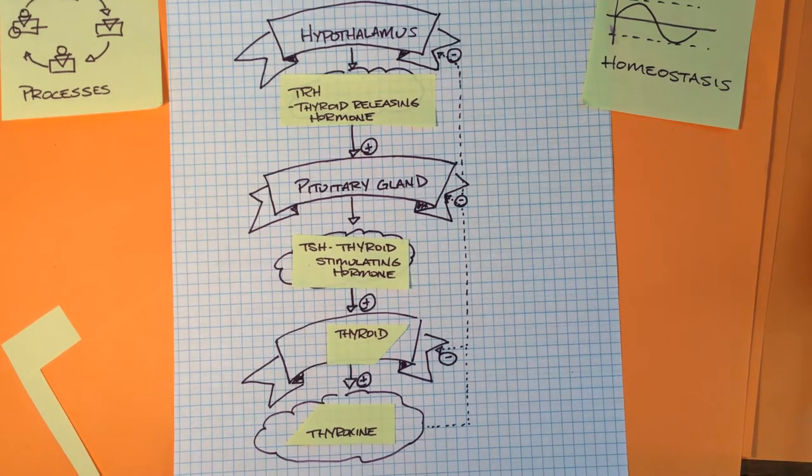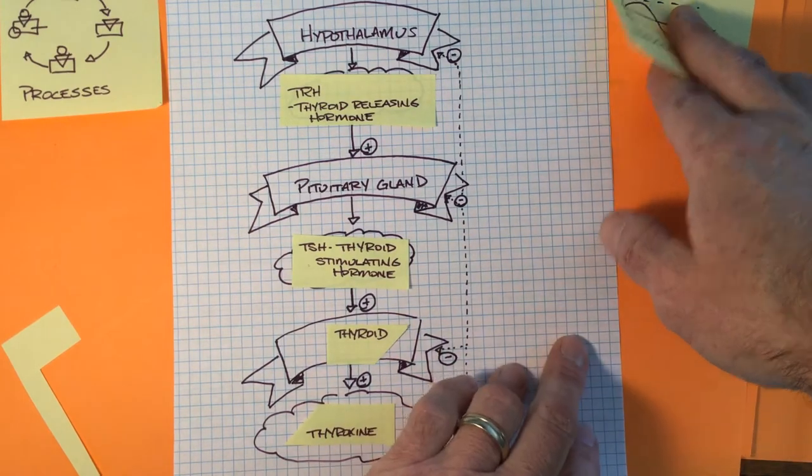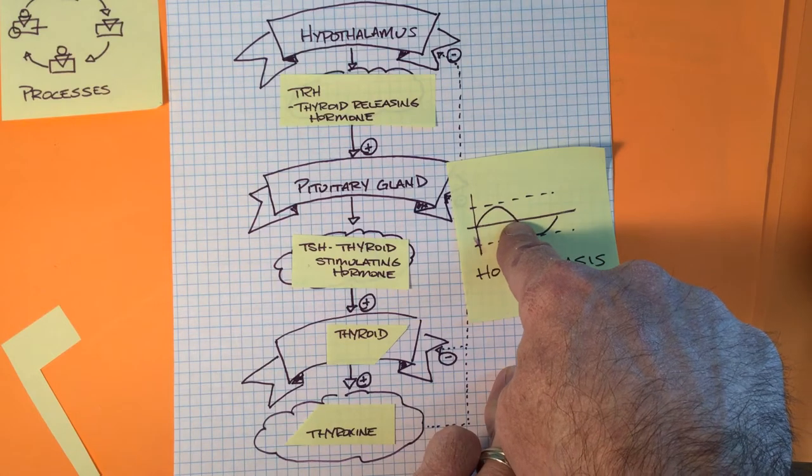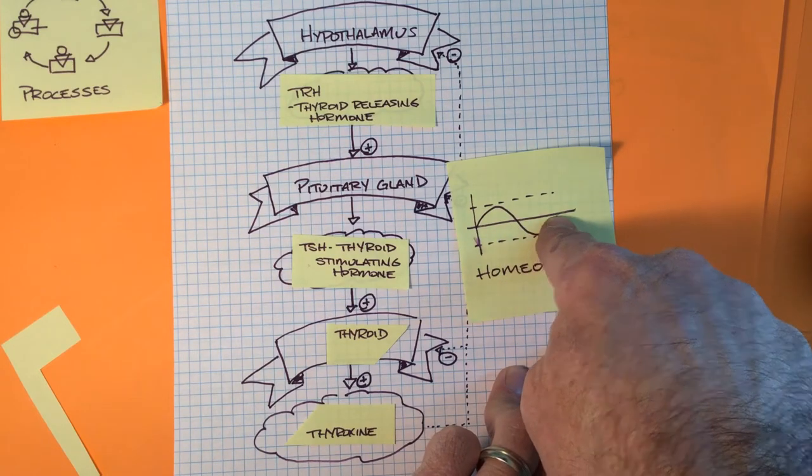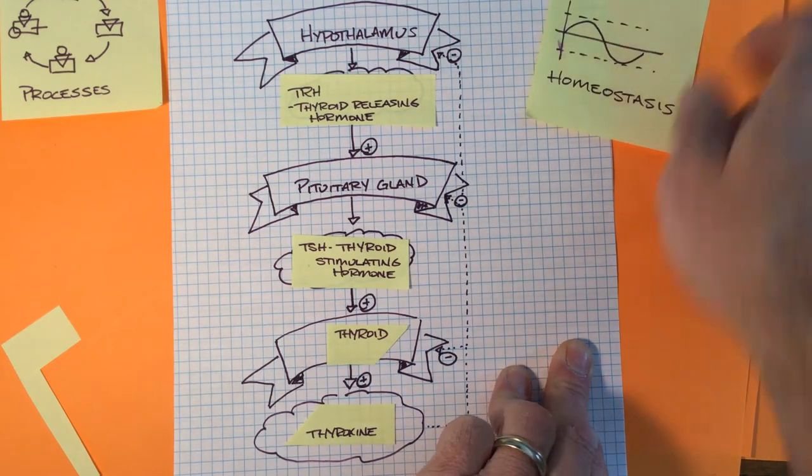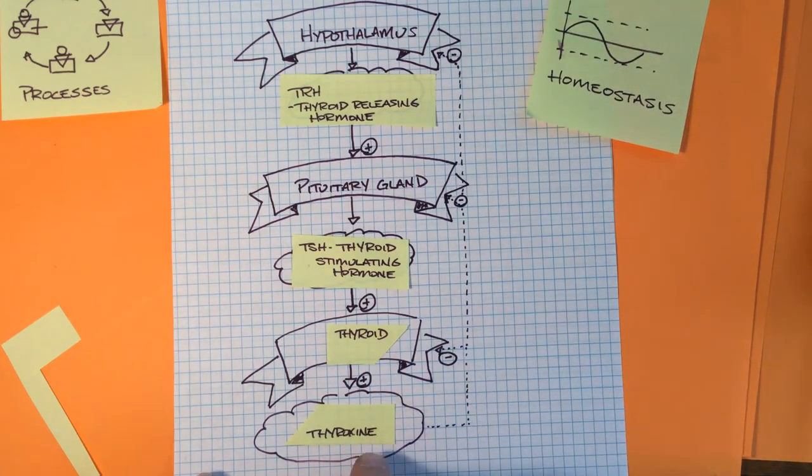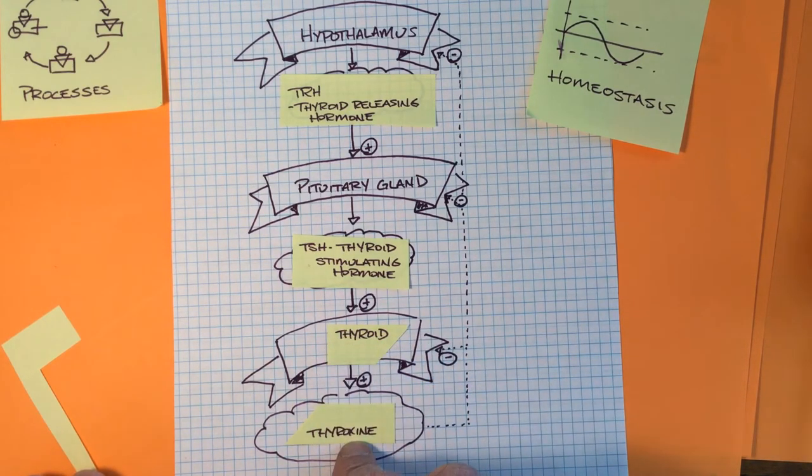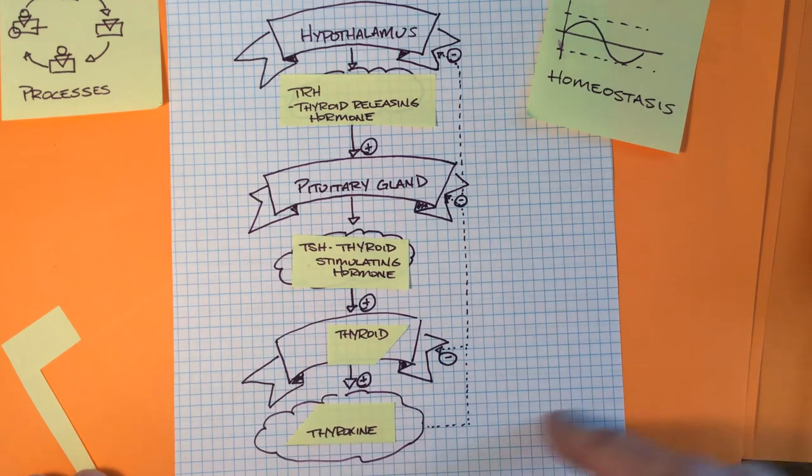Because, as these levels increase, we want to bring them back down to a set point. As certain levels decrease, we want to bring them up to a set point. Here's where that kicks in with this particular thing. So the presence of thyroxin will feed back and tell the thyroid to stop producing thyroxin. How cool is that?